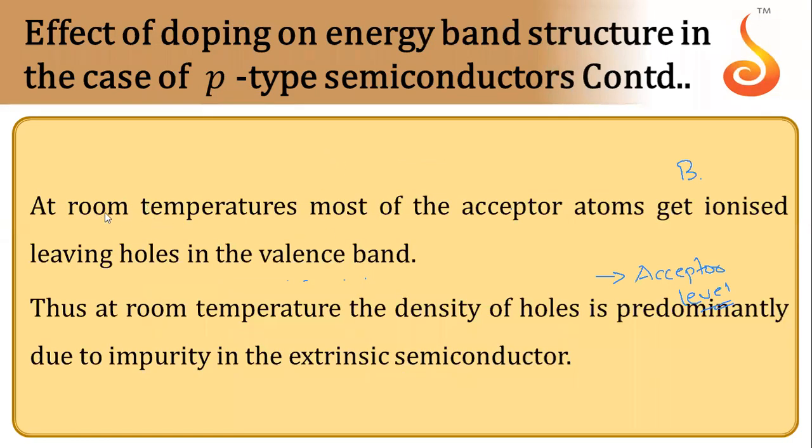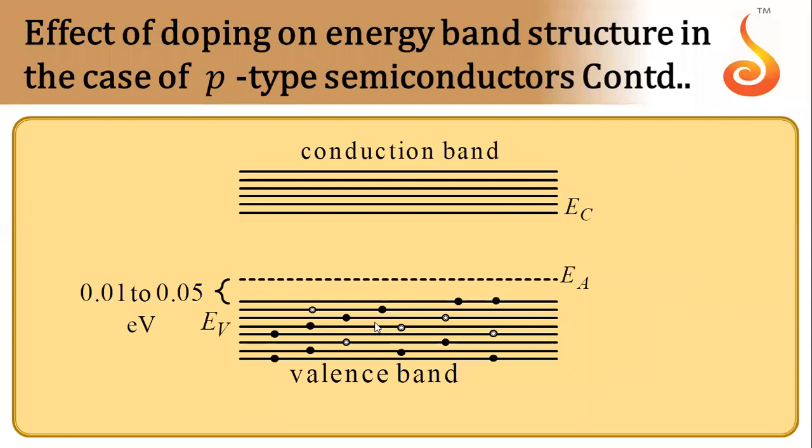At room temperature, most of these acceptor atoms get ionized leaving holes in the valence band. Because the energy difference between acceptor level and valence band is very less, 0.01 to 0.05 electron volts, electrons which are in valence band at room temperature will move from here to here. Most of the electrons will be in acceptor level.